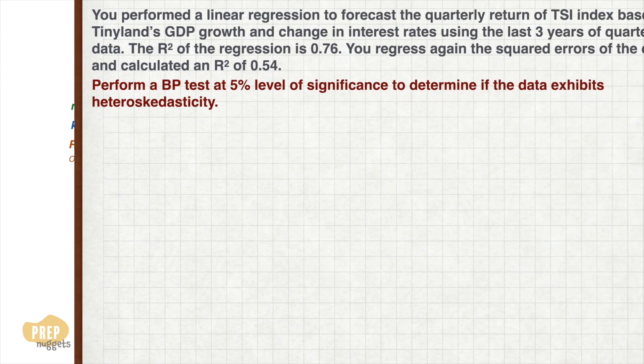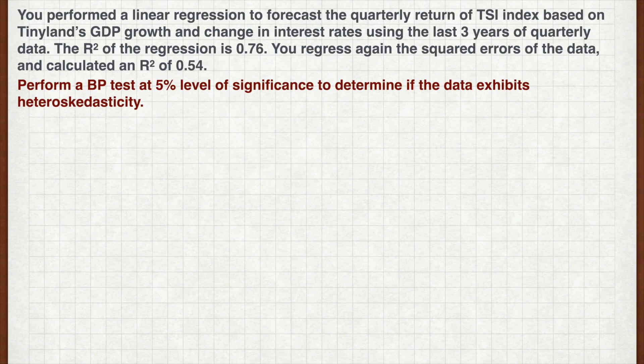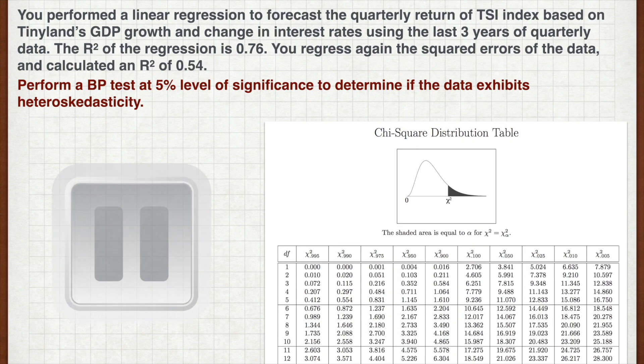Let's illustrate with an example. You perform a linear regression to forecast the quarterly return of the TSI index based on TinyLand's GDP growth and change in interest rates, using the last three years of quarterly data. The R-squared of the regression is 0.76. You regress again the squared errors of the data and calculate an R-squared of 0.54. Perform a Breusch-Pagan test at 5% level of significance to determine if the data exhibits heteroscedasticity.